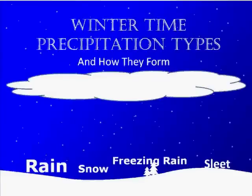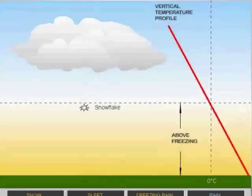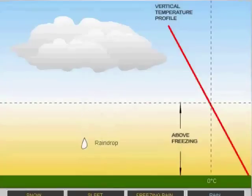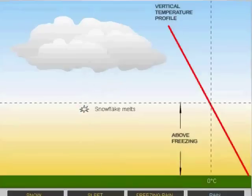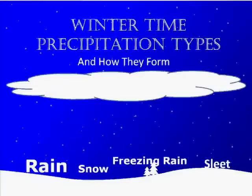We'll start off with rain, which occurs when precipitation that initially starts out as an ice crystal falls through a continuous warm layer all the way to the surface. Temperatures need to be above or very near to freezing at the surface for the precipitation to remain in the liquid state all the way to the surface.